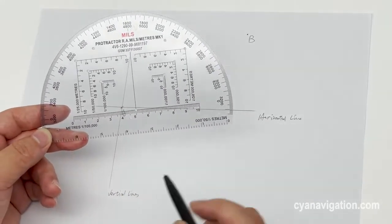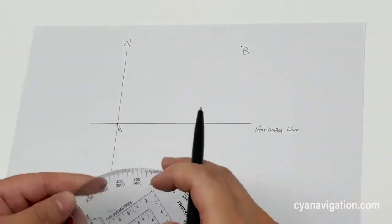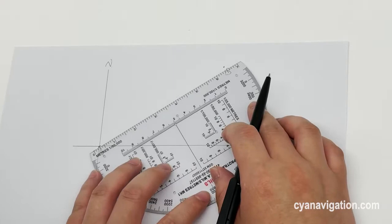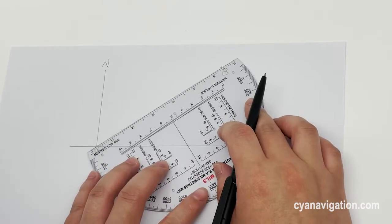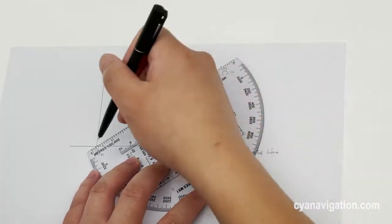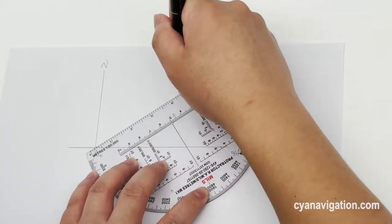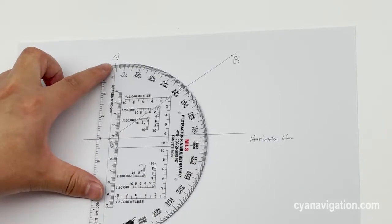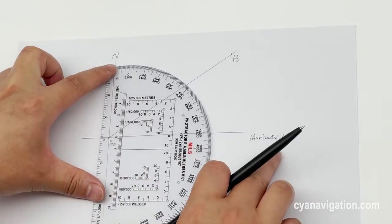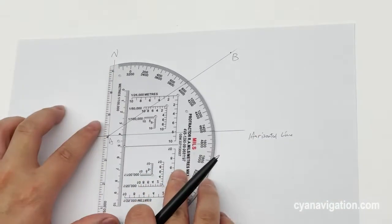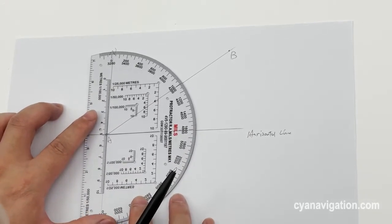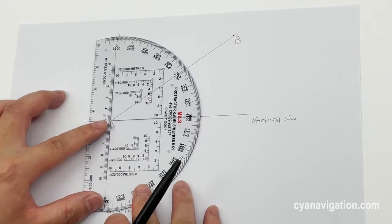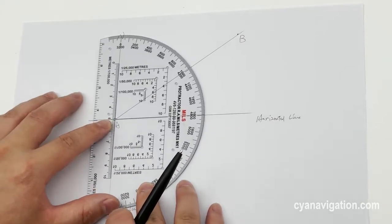What we need to do first is to align a line close from point A to point B and place the protractor to the east. Just align the central point to our departure point.